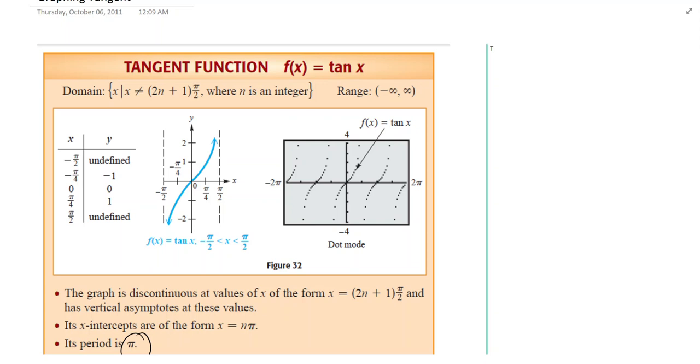The tangent has a domain of x not equal to 2n plus 1 times pi over 2, meaning you get these curves and every point at 2n plus 1 times pi over 2, you're going to have a vertical asymptote, a barrier that it can't go across.